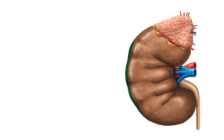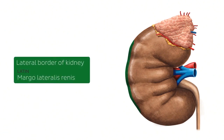Now we're highlighting a new structure known as the lateral border of the kidney. As the name indicates, the lateral border has a convex shape and is found on the lateral part of the kidney — basically the lateral side toward the edges of your body.